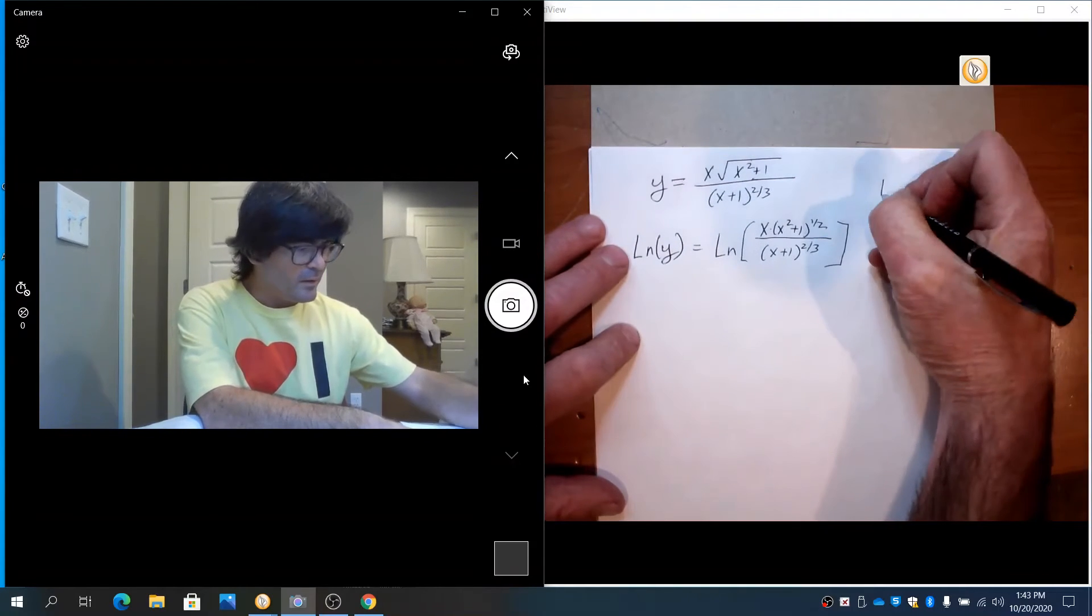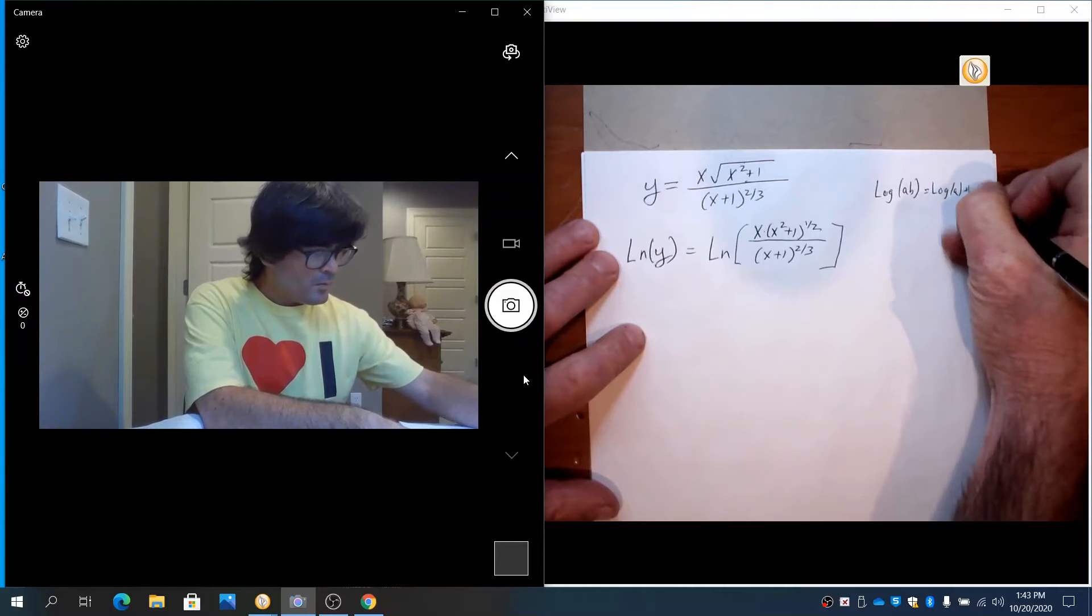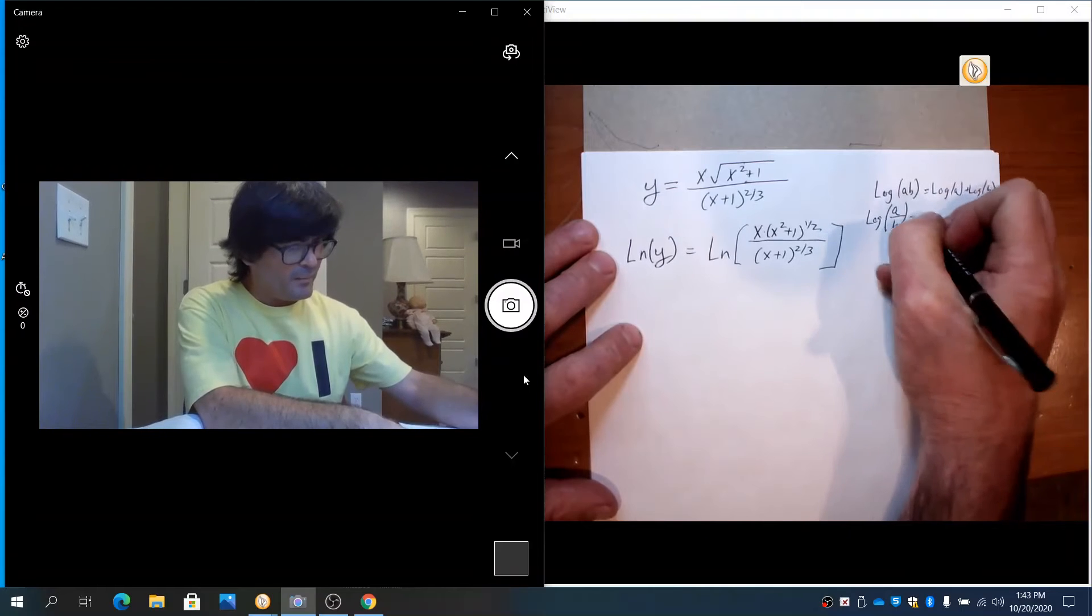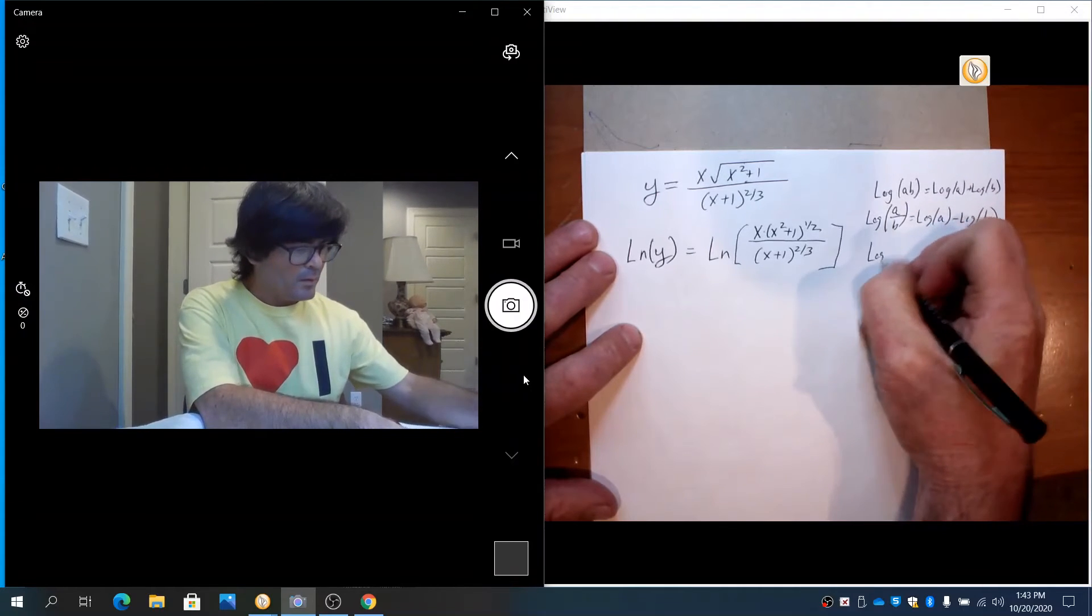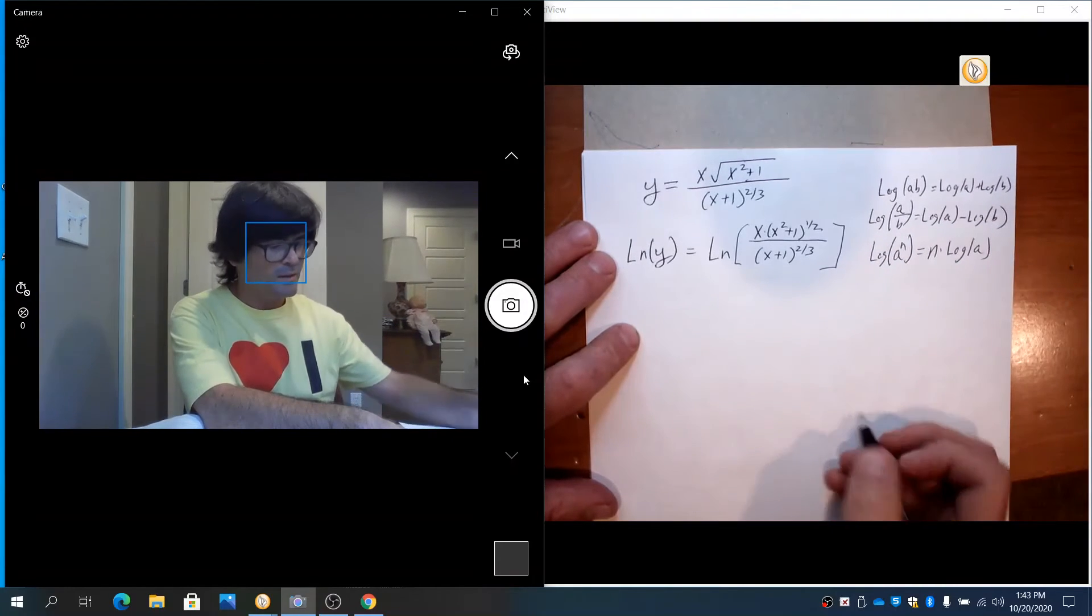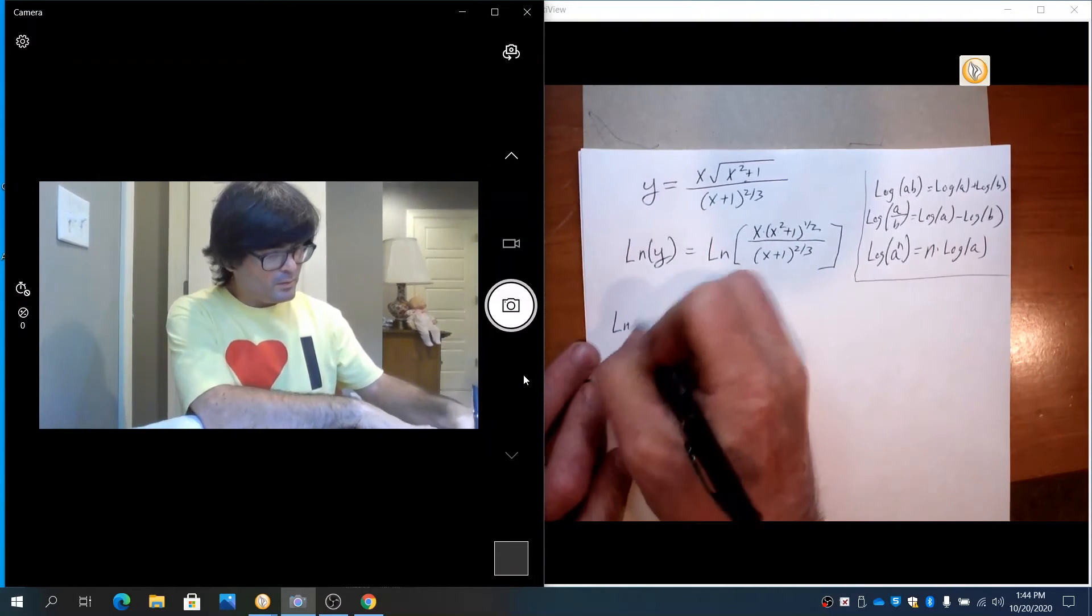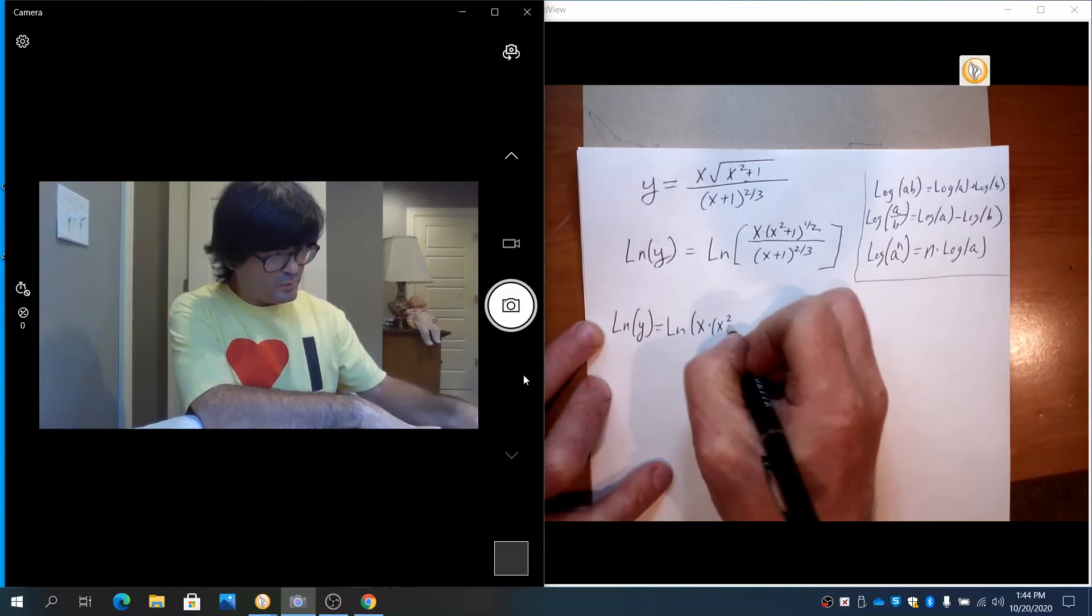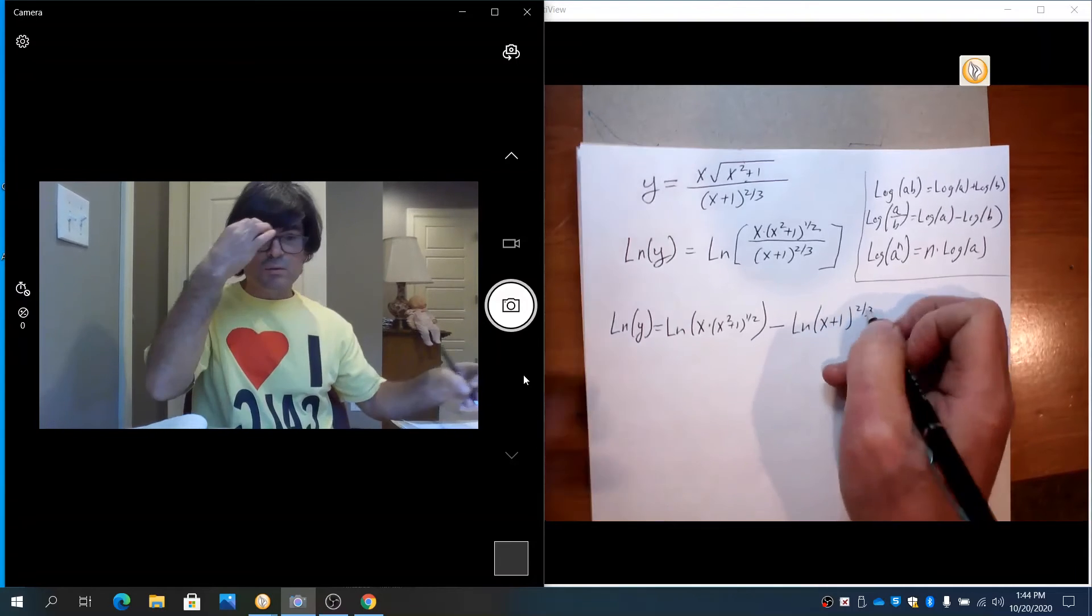So I'll just write down log of a times b, log of a plus log of b. That's one of my log properties. Log of a divided by b, log of a minus log of b. And then finally log of a to the n is n log of a. So those are my 3 log properties here. I'll just kind of box those over to the side. I've got division here, so we'll use the middle log property first. I've got log of y is log of x times x squared plus 1 to the 1 half minus natural log of x plus 1 to the 2 thirds.